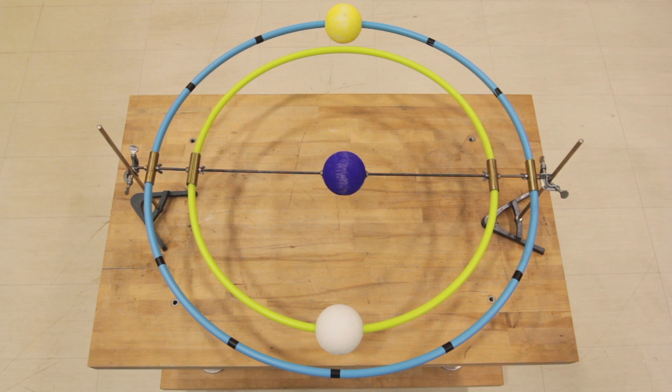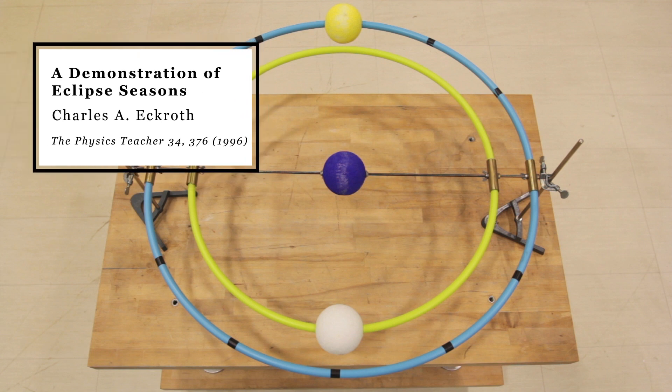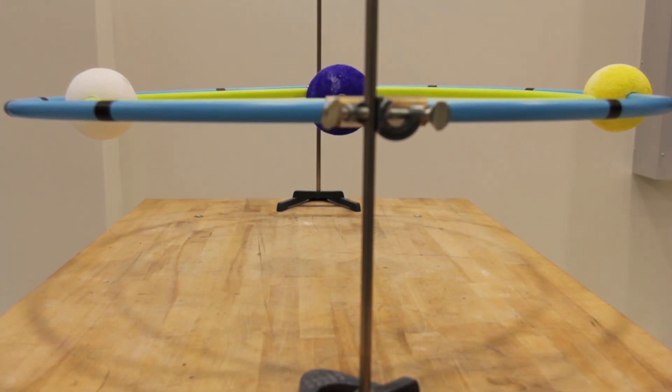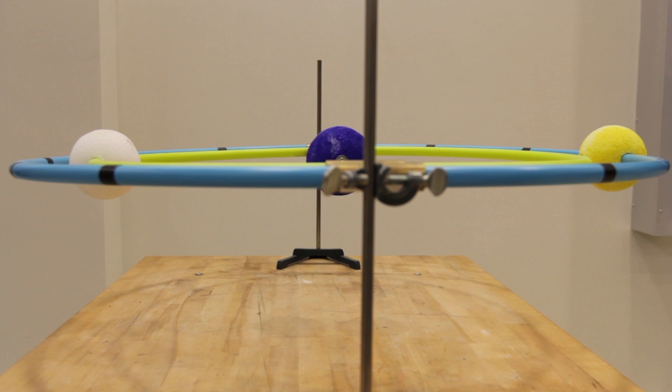The apparatus shown is useful for visualizing eclipse seasons. It is based on the article, A Demonstration of Eclipse Seasons by Charles Eckroth, published in the Physics Teacher in 1996. One should keep in mind that nothing is close to the proper scale in this model.